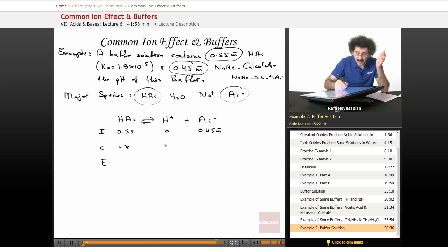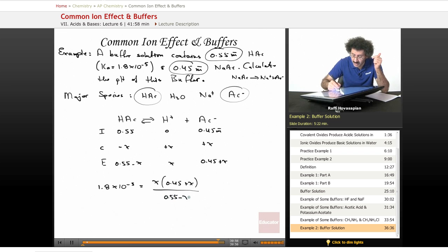Some of this is going to dissociate. Some of this is going to show up. 0.55 minus X. This is X. This is 0.45 plus X. Now we set it equal to the Ka. Our Ka is 1.8 times 10 to the negative 5. It's equal to the hydrogen ion concentration, X, times the acetate concentration, which is 0.45 plus X, divided by the HAC concentration, which is 0.55 minus X.